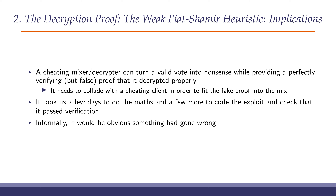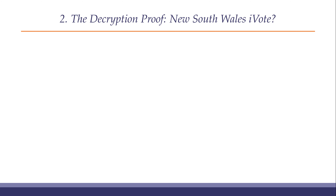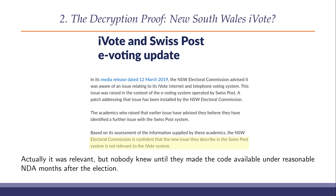Unlike the previous attack, this isn't completely undetectable. It does produce a rubbish ciphertext that makes it look informally as if something had gone wrong, although formally verification would pass. Back to New South Wales — now it's getting closer to election day. We assumed, although we hadn't got the source code, that the same error would apply to the New South Wales system since they seemed to have essentially the same system. But they put out a press release saying the Electoral Commission is confident that the new issue is not relevant to the iVote system. It turned out later that it was relevant, but nobody knew until months after the election when they made the code available under a reasonable NDA.